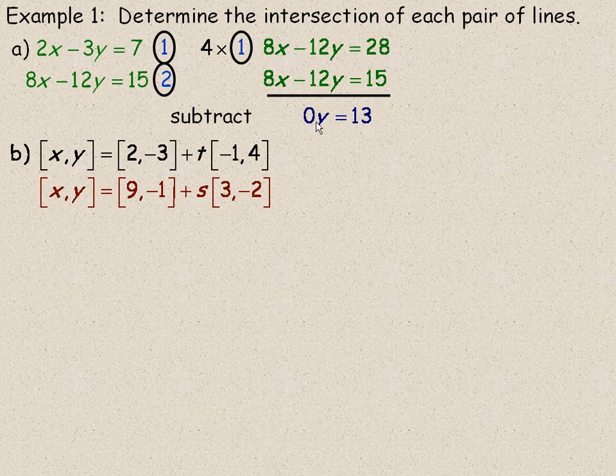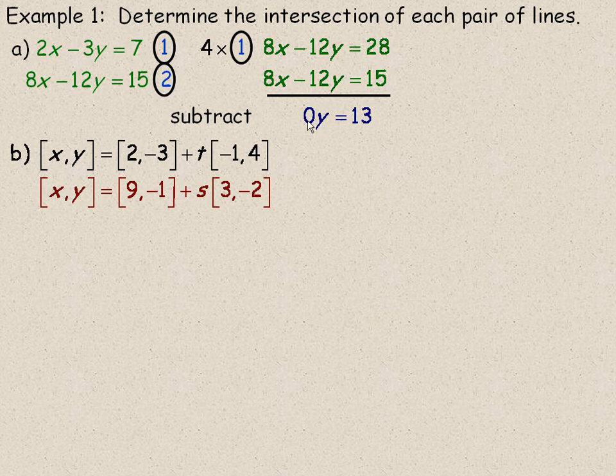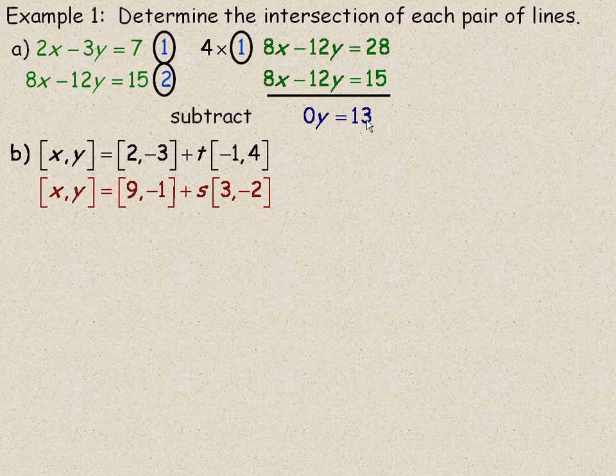Now, the equation 0y equals 13 means, what number do you multiply by 0 to get 13? And there is no answer to that. No matter what you multiply by 0, you cannot get 13, or any non-zero number.